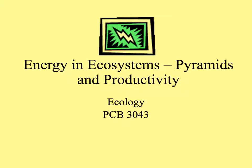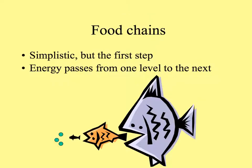Let's look at how energy moves through communities and ecosystems. The most simplistic representation is the food chain. This is simplistic, but the first step to seeing how energy goes from one level to the next.